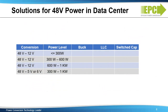Now let's summarize the topology choices by conversion and power level. The switch cap is inexpensive and very efficient at 48-volt to 12-volt conversion for under 600 watts, but has limitations for higher power and is too complicated for 48-volt to 6-volt conversion. The buck is the least expensive and smallest solution for 48 to 12 volts up to about 300 watts. The LLC allows for the best efficiency for greater than 600 watts for both 48 volts to 12 volts and 48 volts to 6 volts, and is the best topology for Vin-to-Vout ratios of 8-to-1 or 10-to-1. An eGaN-based LLC for a 1-kilowatt 48-volt to 6-volt or 48-volt to 12-volt converter is sized smaller than a 1/8th brick.